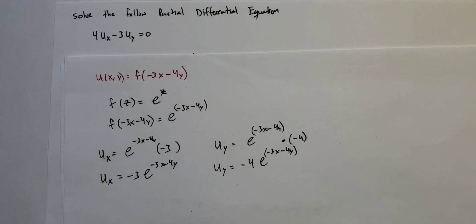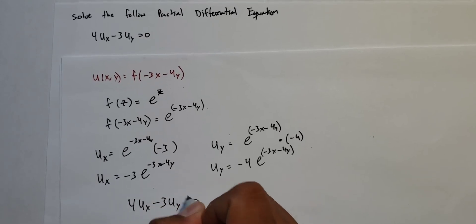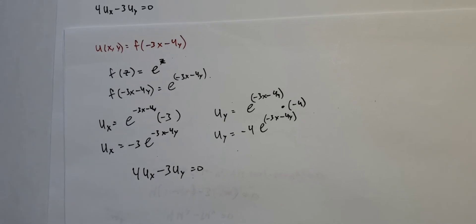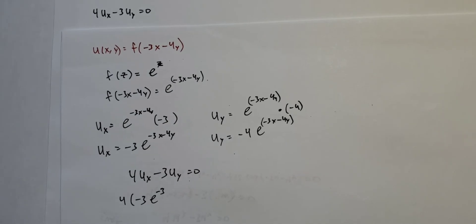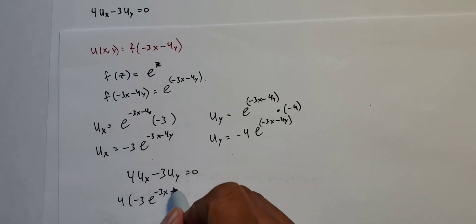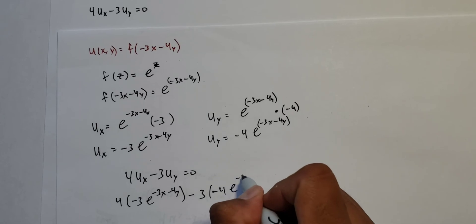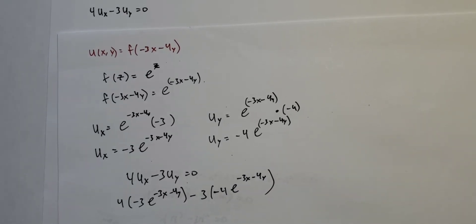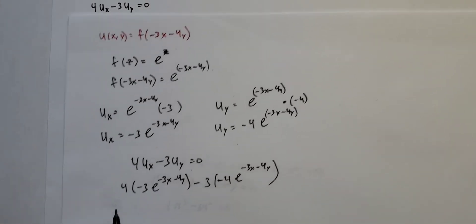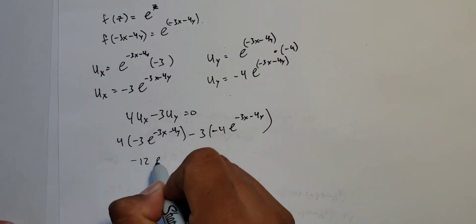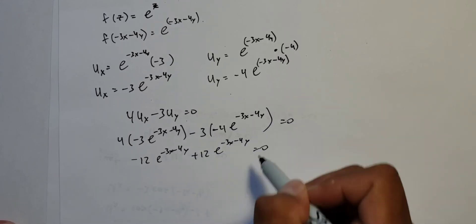We check by plugging back into the original PDE: 4u_x − 3u_y = 0. Substituting: 4(−3e^(−3x − 4y)) − 3(−4e^(−3x − 4y)) gives −12e^(−3x − 4y) + 12e^(−3x − 4y), which equals 0. Sure enough, that equals 0.